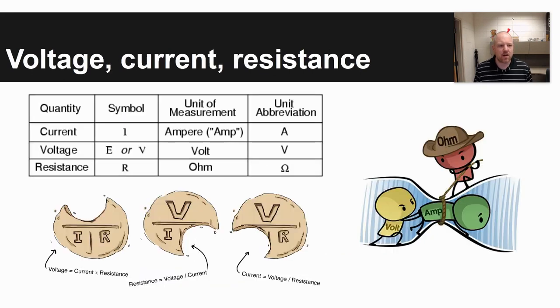So first off, voltage, current, resistance. Voltage is measured in volts shown by a capital V. Current uses the symbol I or A and is measured in amps. Resistance is measured in ohms, uses the symbols R or an omega symbol. Voltage is like electrical potential. Current is the electrical flow. Resistance impedes or slows the flow of electricity.